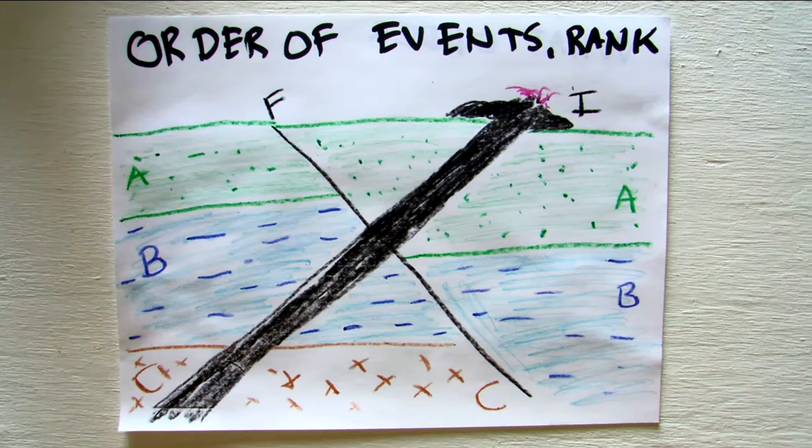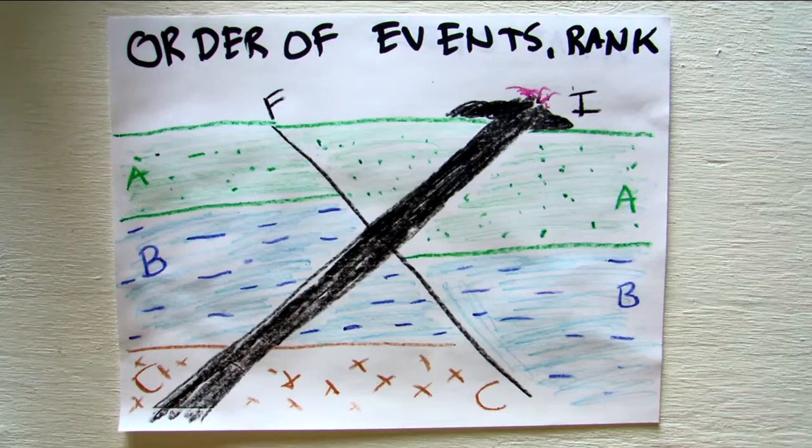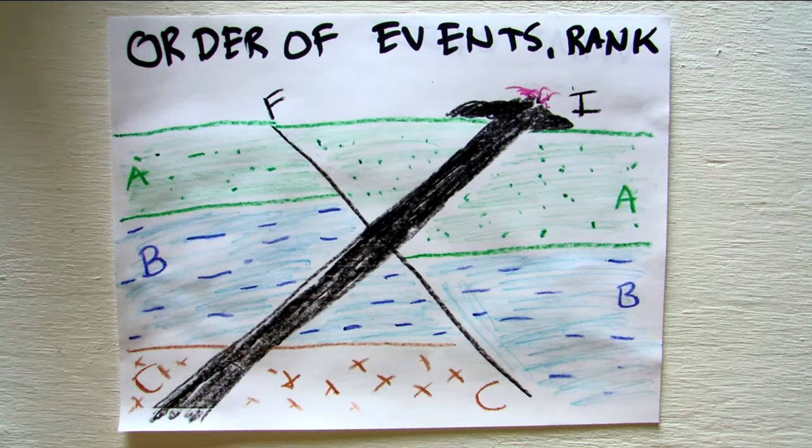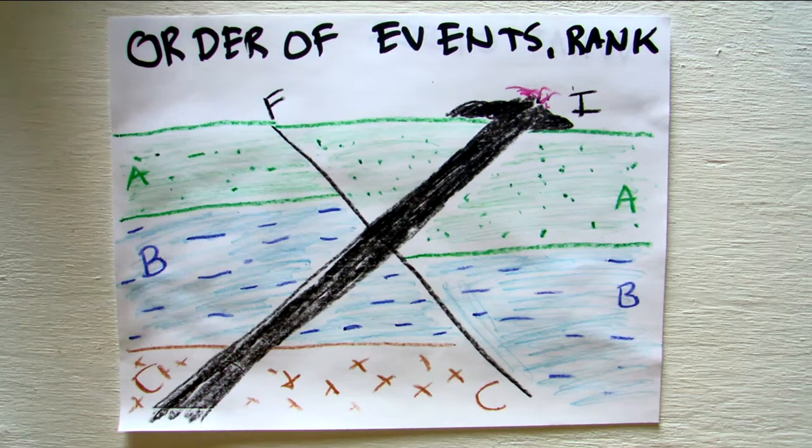Try ranking these from oldest to youngest. The letters are layers A, B, and C, intrusion I, and fault F. Go ahead and take a moment and try it out on your own now.